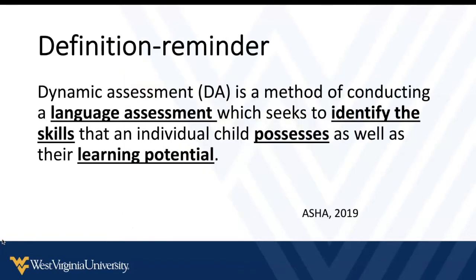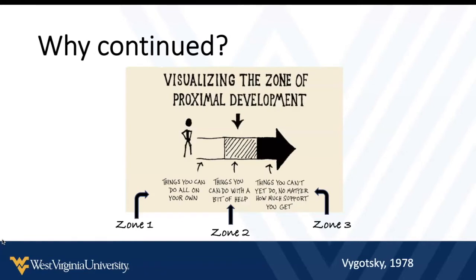Zone two — what students can do with some support — is really where we focus with dynamic assessment. Zone one is what they've mastered, and zone three is completely outside their current ability. Dynamic assessment helps us not just look at skills they have or don't have independently, but also to really look at learning potential — which helps us write meaningful IEP goals in zone two rather than unattainable zone three targets.